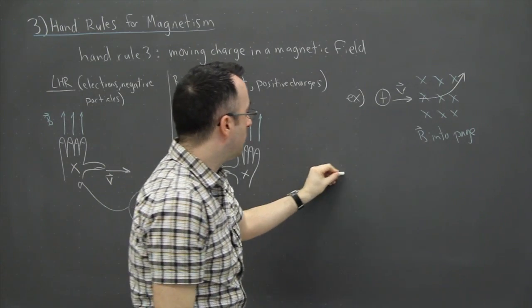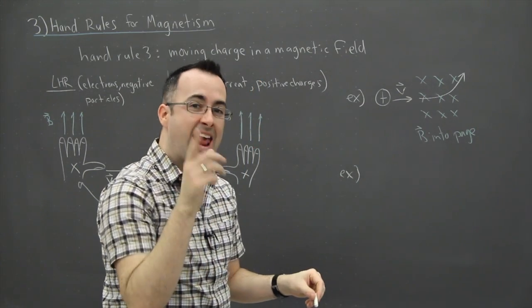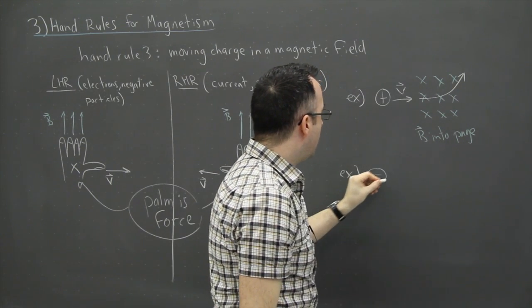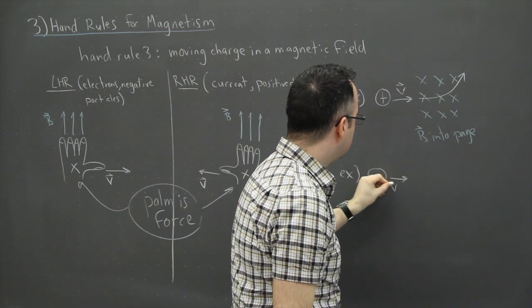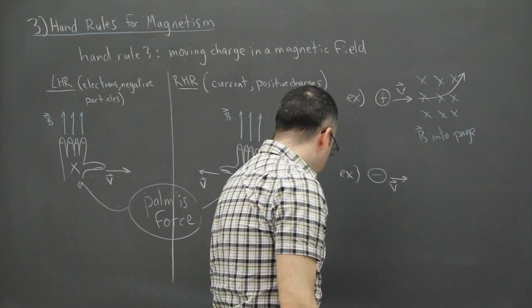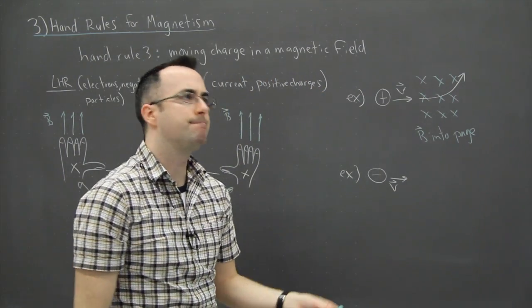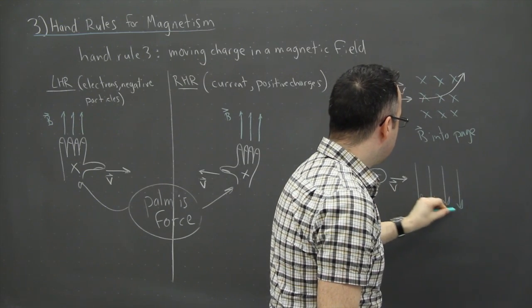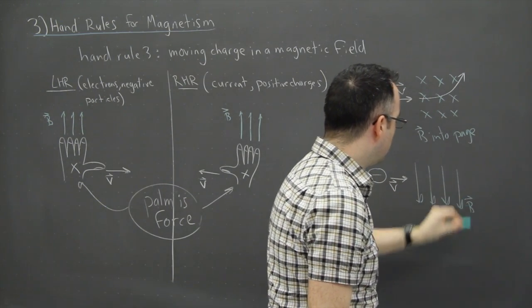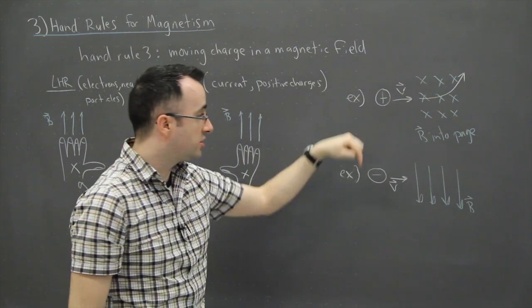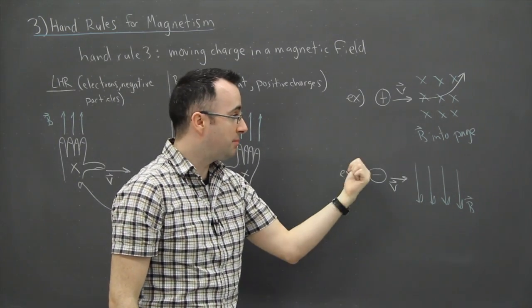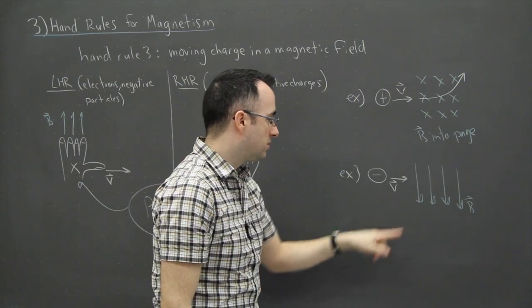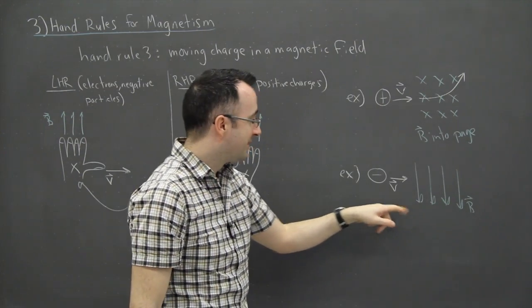Let's do another example. What if I have, this time I'd say a negative particle, maybe an electron, and it's also going to the right. But this time I'm going to make my magnetic field lines down. So this time I don't have to really define it, but that's my, those are my magnetic field lines. They're actually going down. So not into the page or out of the page, but actually just straight down. Those are really lousy arrows.